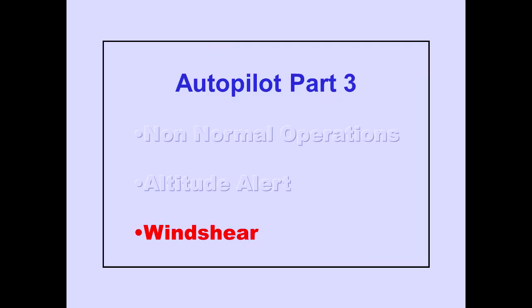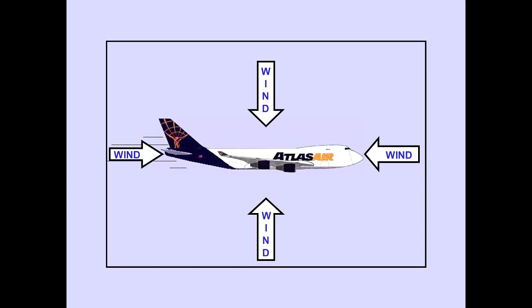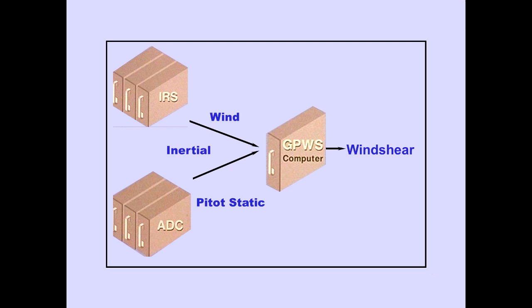Finally, let's discuss the Autoflight Windshear System. The windshear system consists of detection, alert, and guidance. A windshear condition is detected by comparing total aircraft energy with horizontal and vertical wind energy. Wind and inertial information from the IRS's and pitot-static information from the air data computers are used by the Ground Proximity Warning System computer to determine a windshear condition.